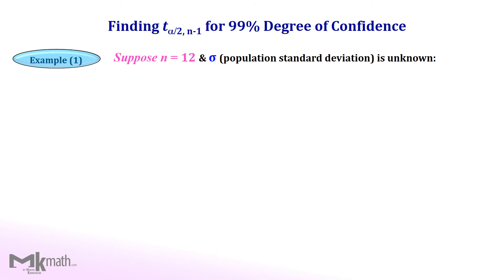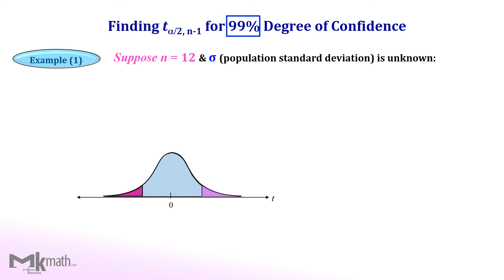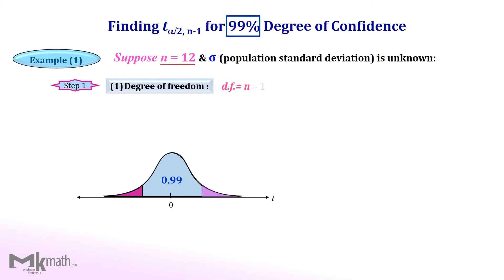Let's take a look at the first example: finding t-critical values for a 99% confidence interval with a sample size of 12. Since the confidence level is 99%, the center area must be 0.99. As Step 1, find the degree of freedom by subtracting 1 from the sample size of 12, which is 11.